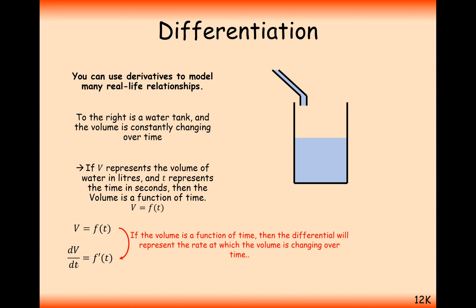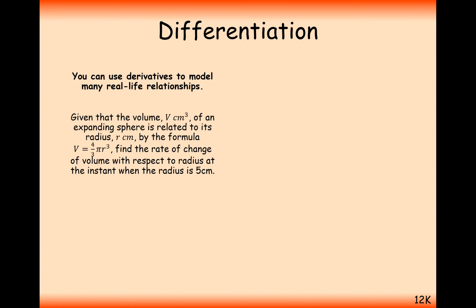So we can think about dv by dt equals f dash of x. Let's have a look at a question here. Given that the volume v in centimeters cubed of an expanding sphere is related to the radius by the formula v equals 4 over 3 pi r cubed.